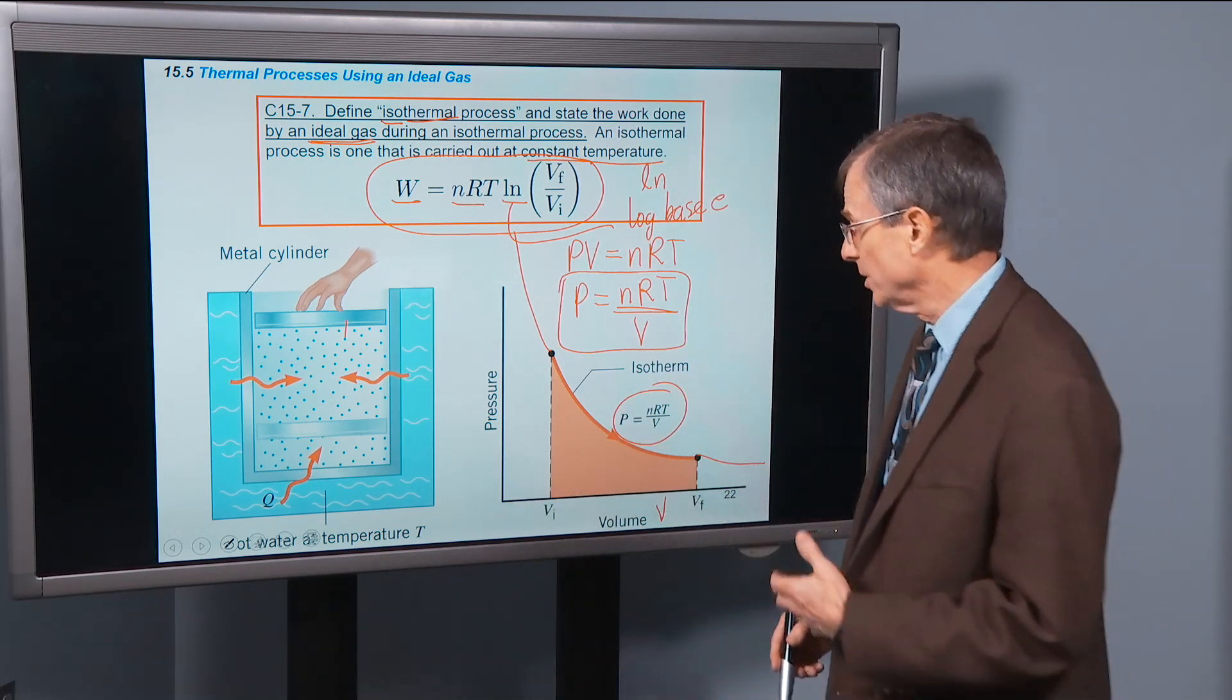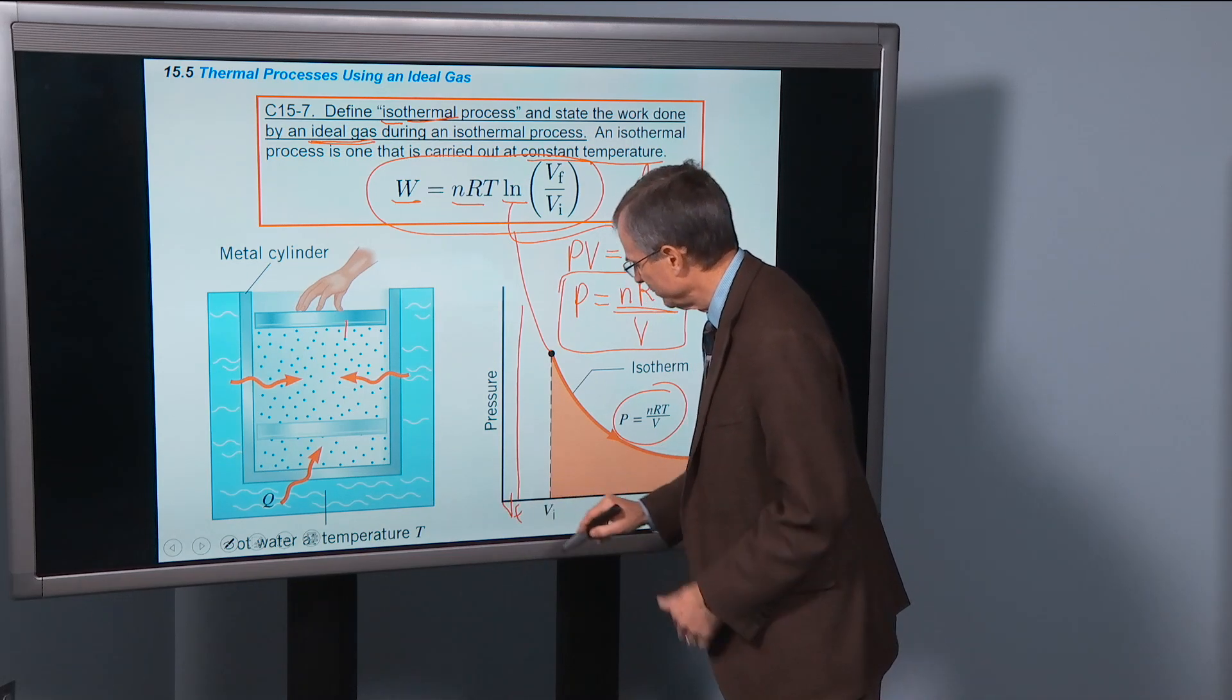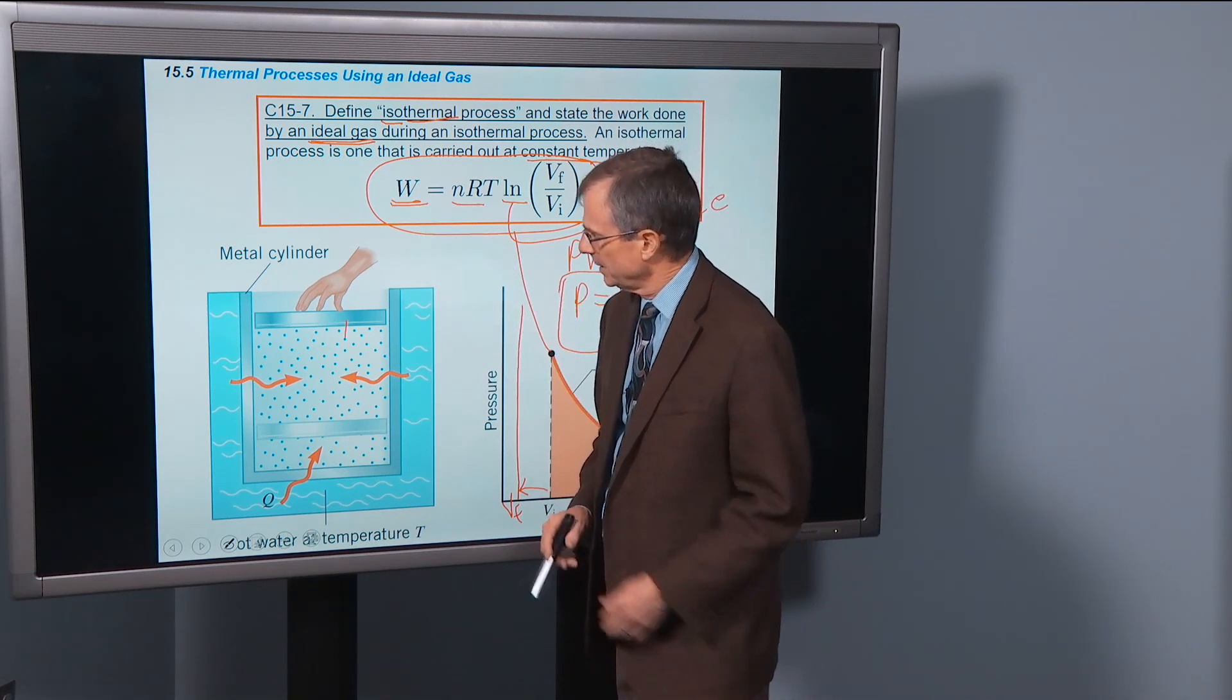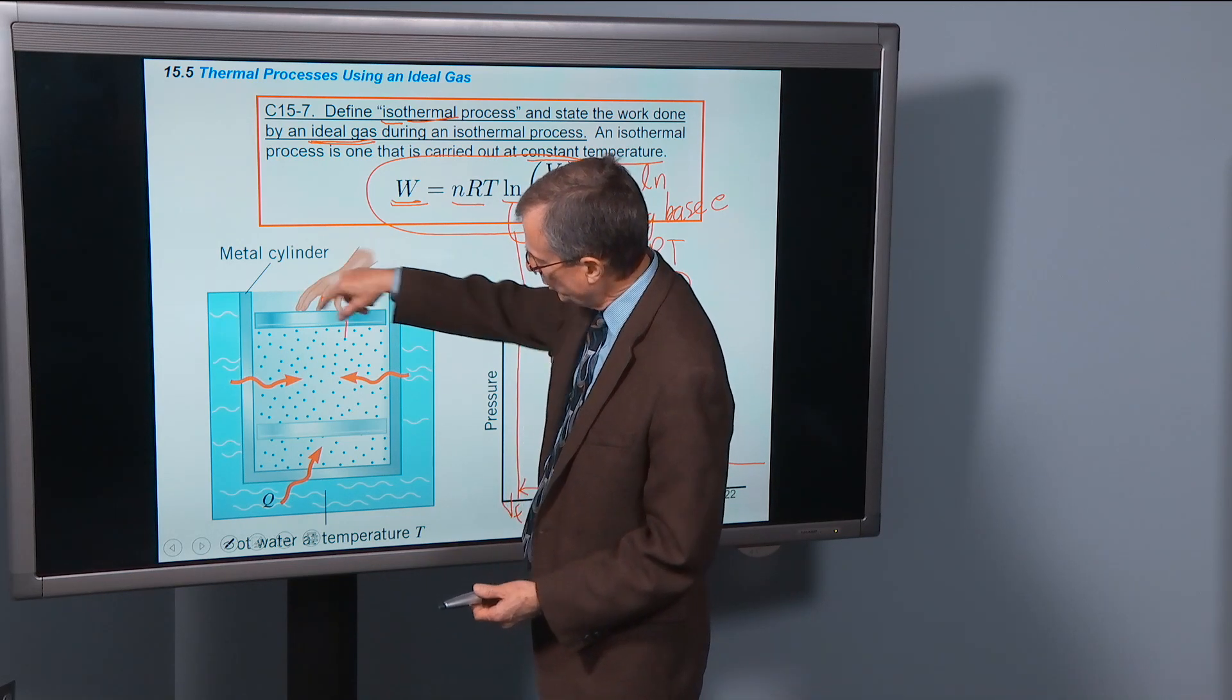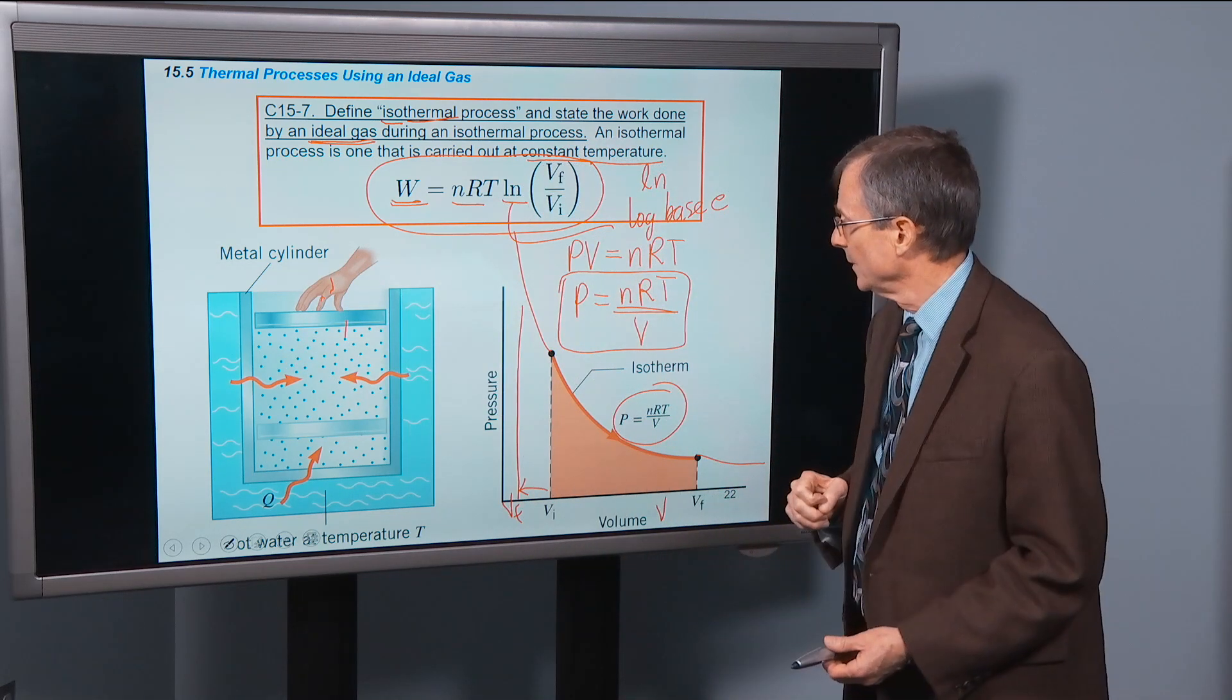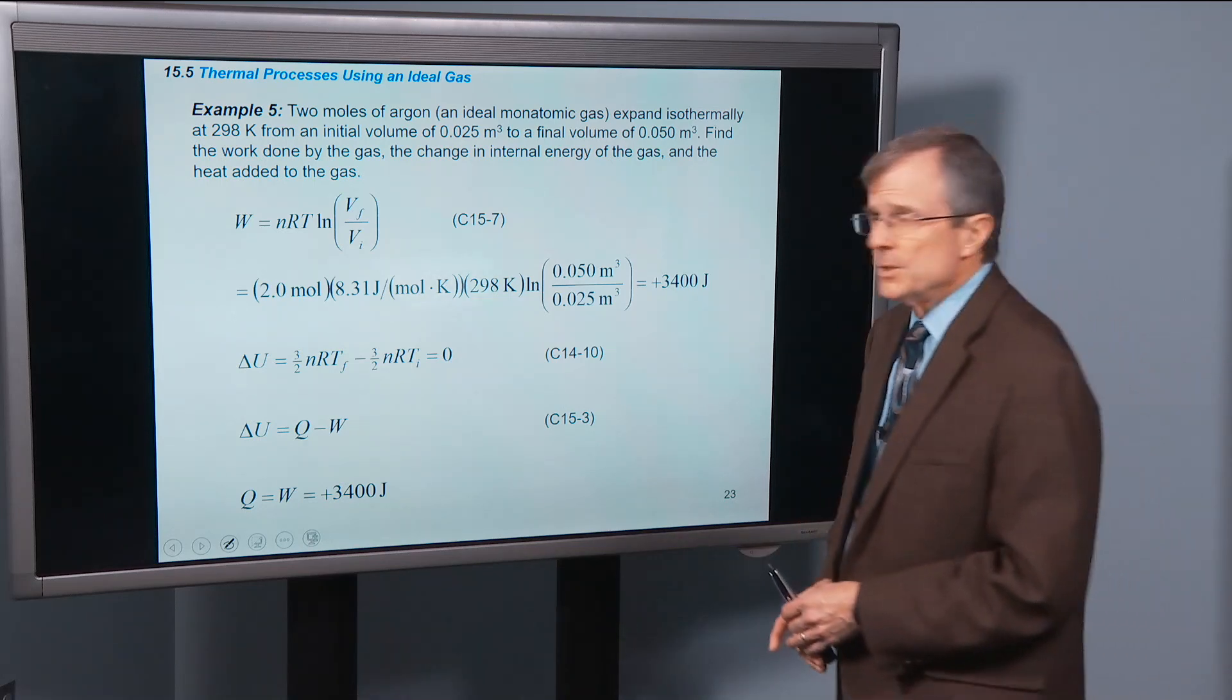You can also have an isothermal contraction where the final volume is less than the initial volume. So that would be where the final volume is down here, and we're moving in that direction. In that particular case, you'll get a negative amount of work done. And that would be the case where instead of letting this movable piston move up, you're going to smash it down and decrease the volume. And in that case, the gas does a negative amount of work.